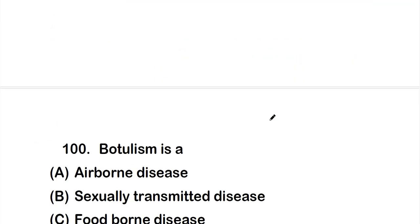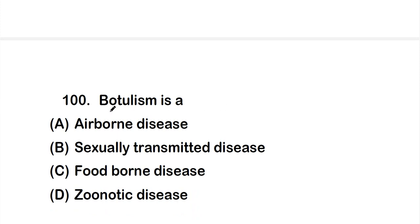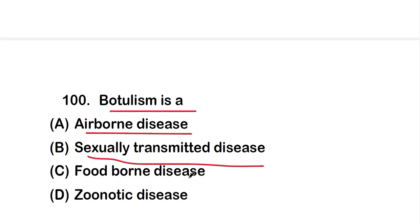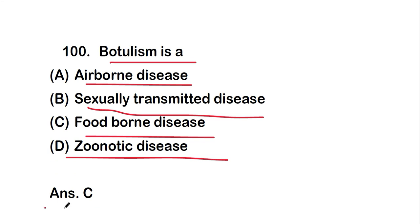Question number 100: Botulism is — option A: an airborne disease, option B: a sexually transmitted disease, option C: a foodborne disease, option D: a zoonotic disease. The correct answer is option C — botulism is a foodborne disease. These are all 20 questions of this Part 5 video on MCQs on disease microbiology or microbial diseases. Thank you for watching.